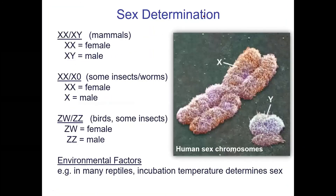In mammals, if you have two X chromosomes you are female; if you have an X and a Y you're male — that's how sex determination usually works in mammals. But that's not the case in other organisms. In insects and many worms, if you have two X you're female, and if you have one X you're male. Birds have a different system called the ZW system — ZW is female, ZZ is male. And some organisms like crocodiles don't use chromosomes for sex determination at all — it depends on what temperature you're incubated while you're an egg.